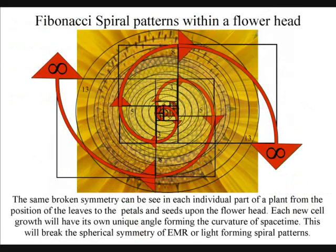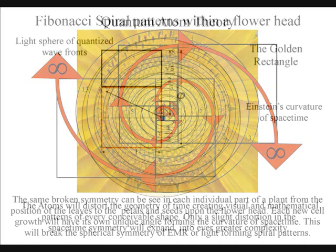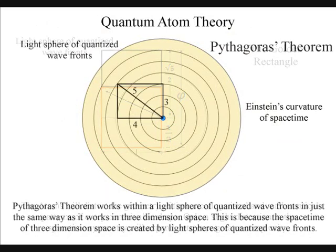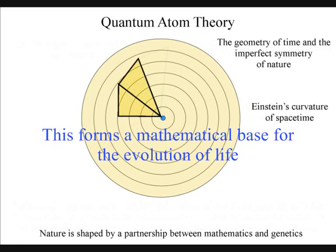The same broken symmetry can be seen in each individual part of a plant, from the position of the leaves to the petals and seeds upon the flower head. Each new cell growth will have its own unique angle, forming the curvature of space-time. This will break the spherical symmetry of electromagnetic radiation, or light, forming spiral patterns.